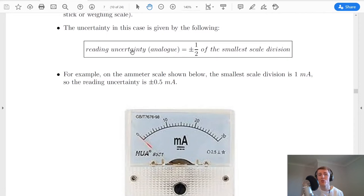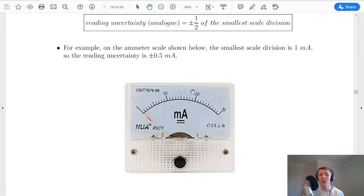And the uncertainty in this case is given by the following result in the box. So the fact that it's in a box means it's important. The reading uncertainty for an analogue scale is equal to plus or minus half of the smallest scale division.